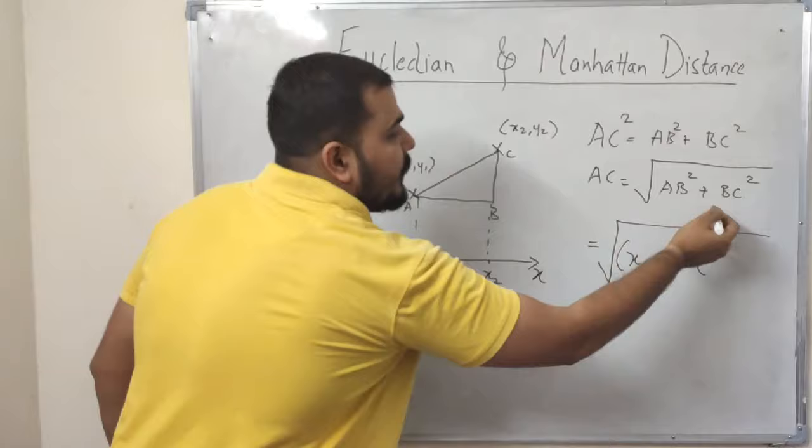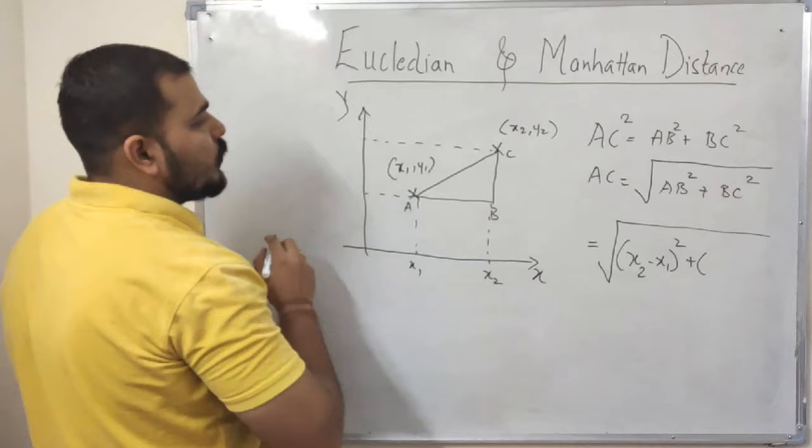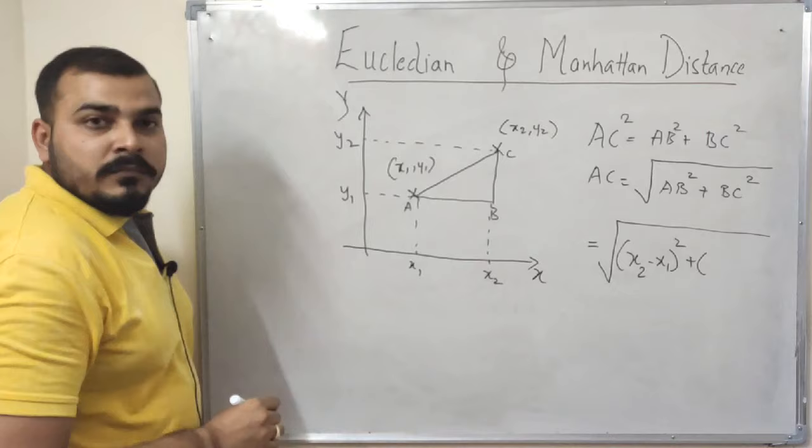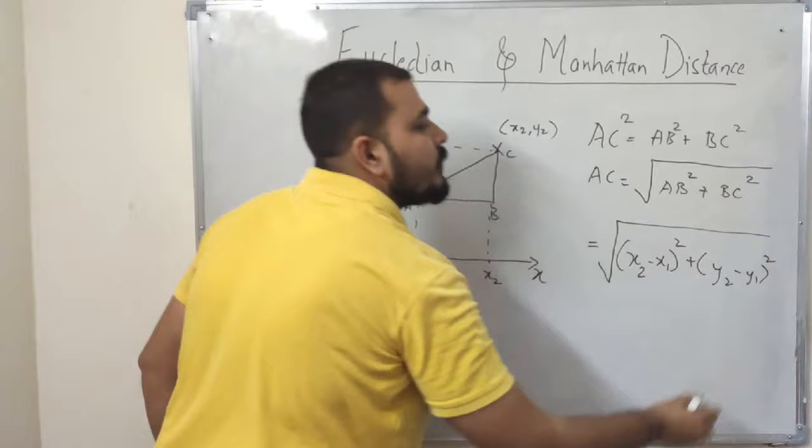Now what about BC square, this particular value? Let me just project this in my y-axis. So when I project this into my y-axis, this is basically my y1 and this is basically my y2. Now if I want to calculate the distance, I can just write y2 minus y1 whole square.